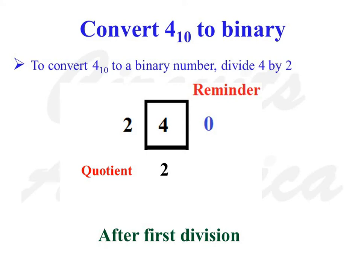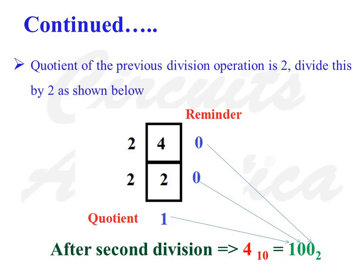Convert 4 to binary. To convert 4 to a binary number, divide 4 by 2. When we divide 4 by 2 for the first time, we get a quotient of 2 and a remainder of 0. As the quotient is not less than 2, we divide again. We get a quotient of 1 and a remainder of 0 for the second division. As the quotient is now less than 2, we have completed the conversion. The decimal number 4 is equal to 100 in binary.